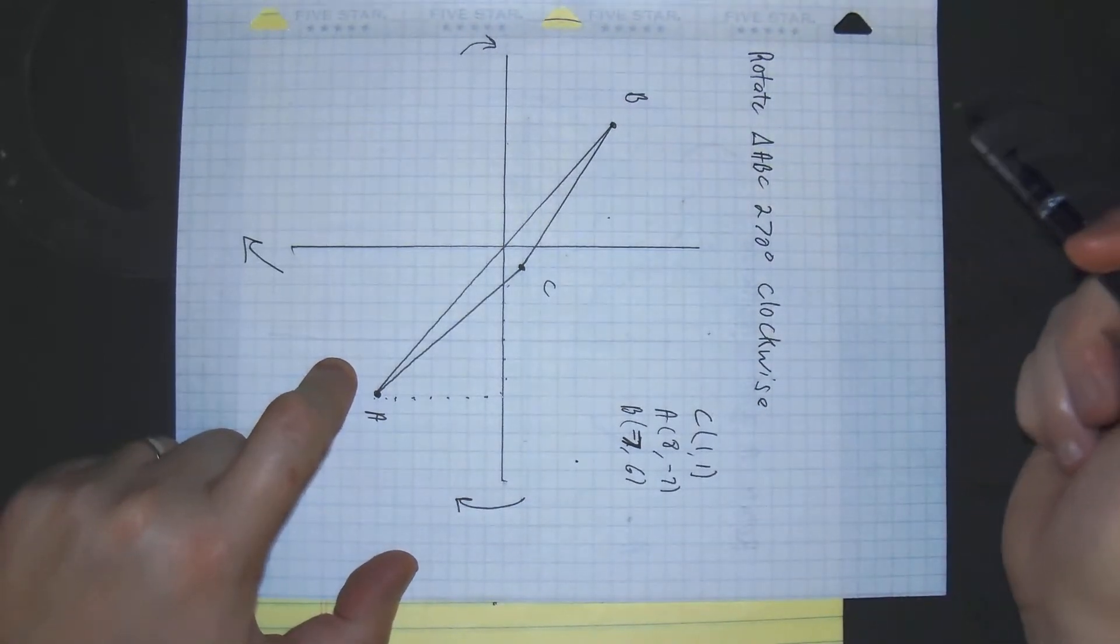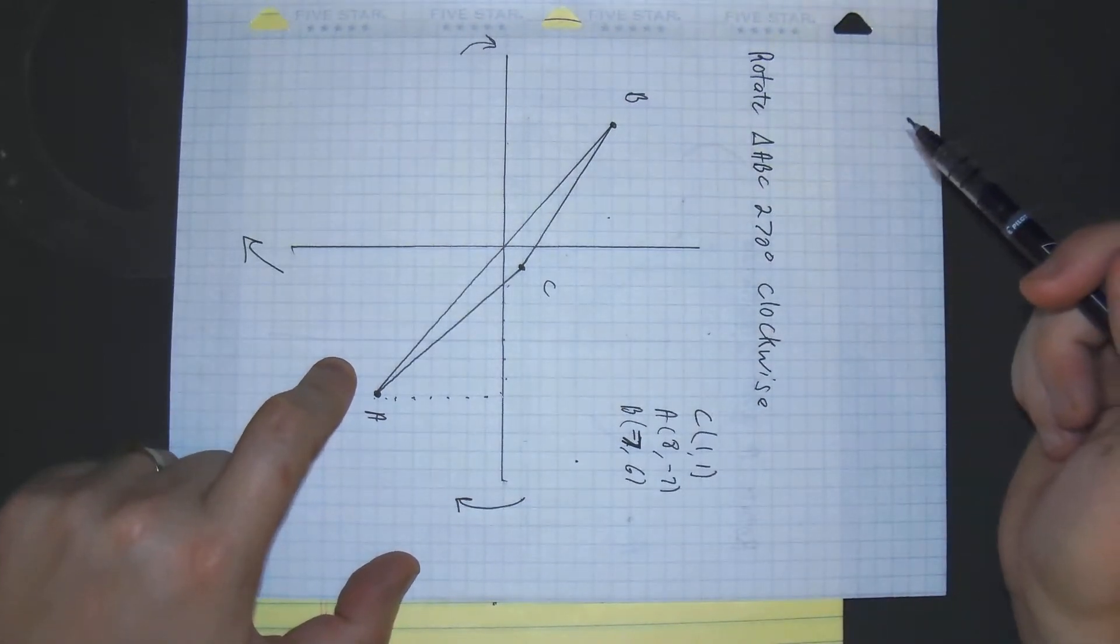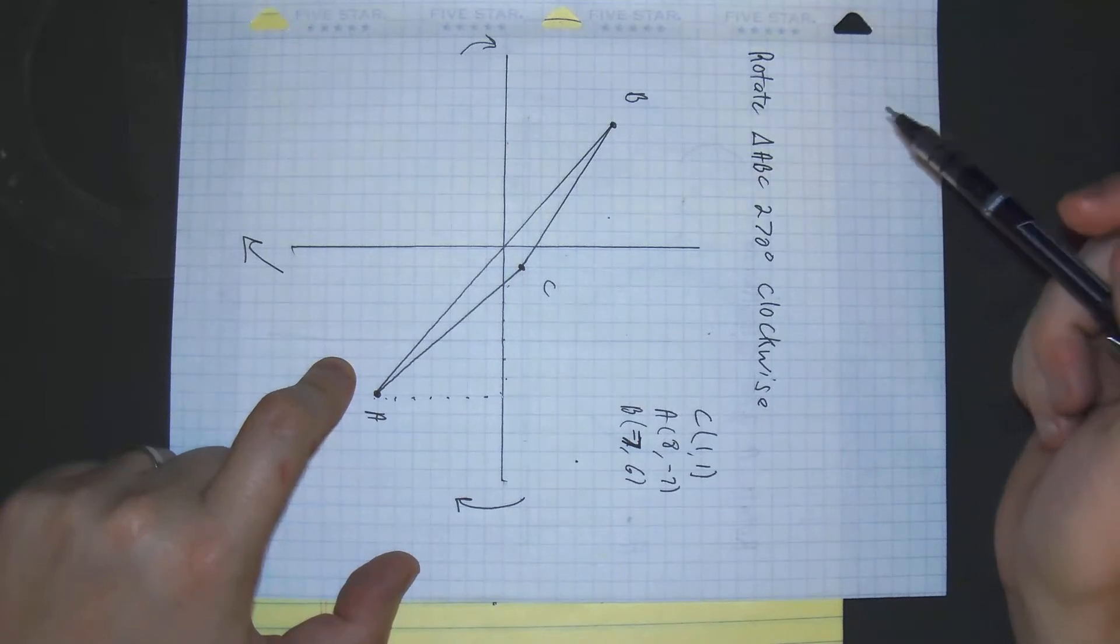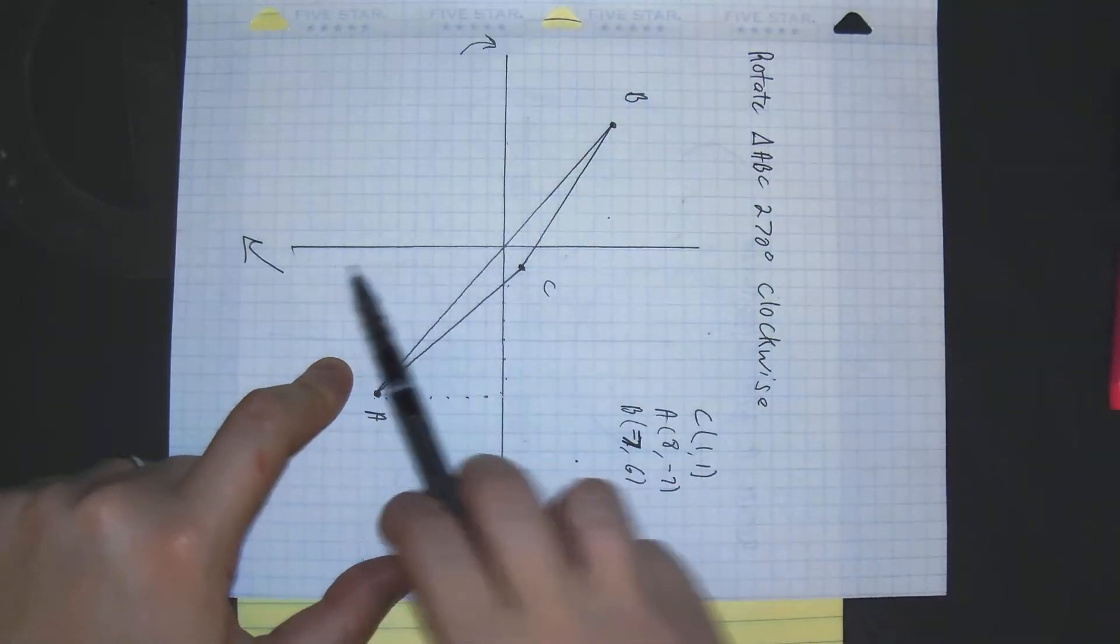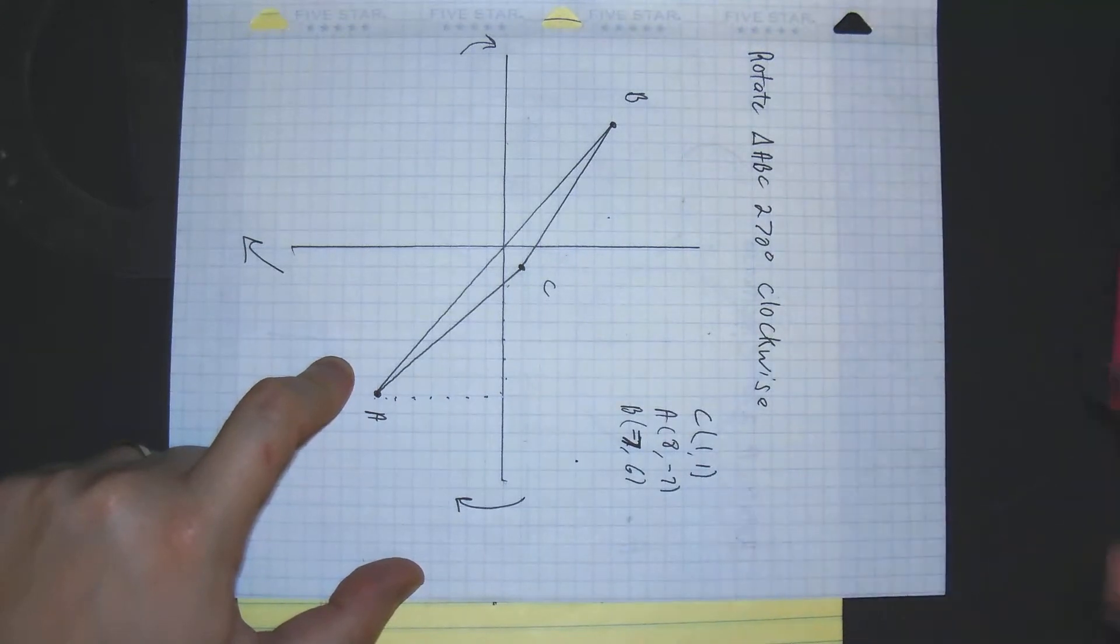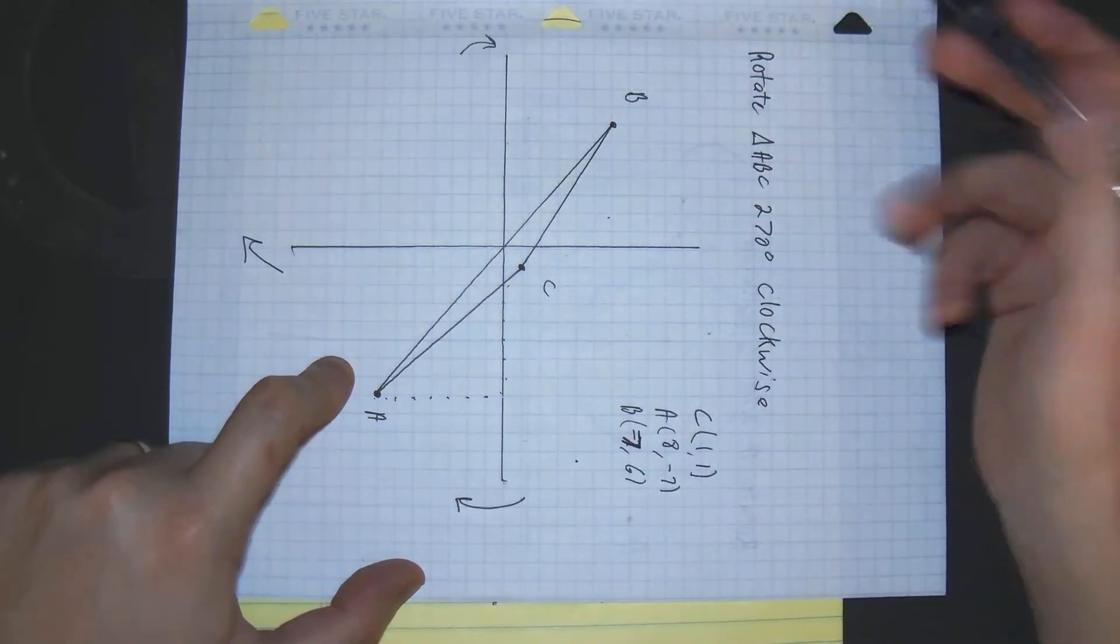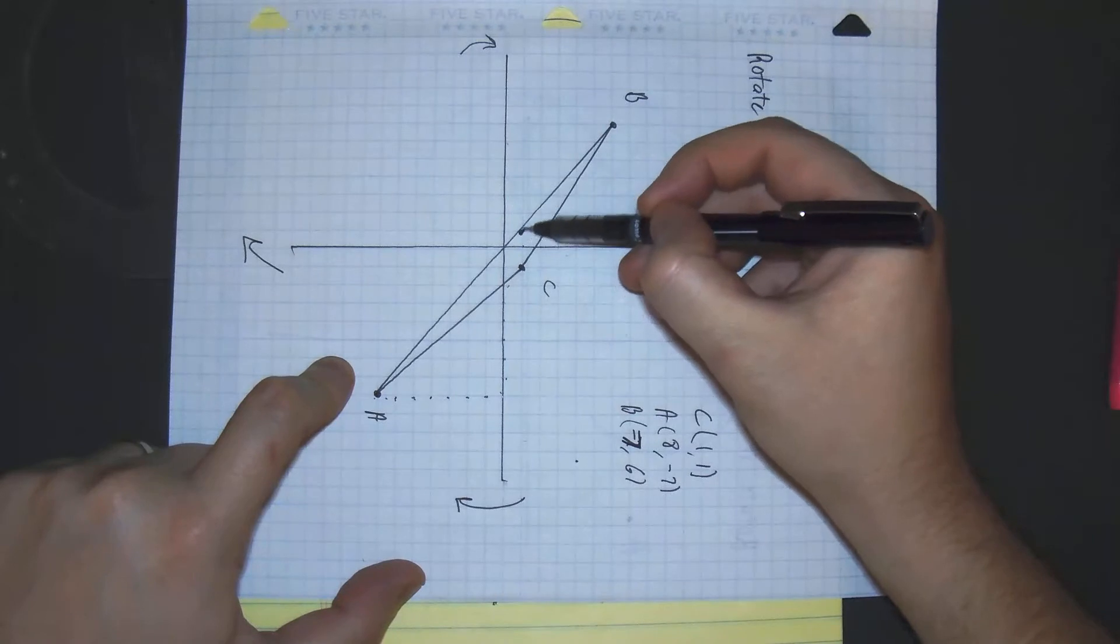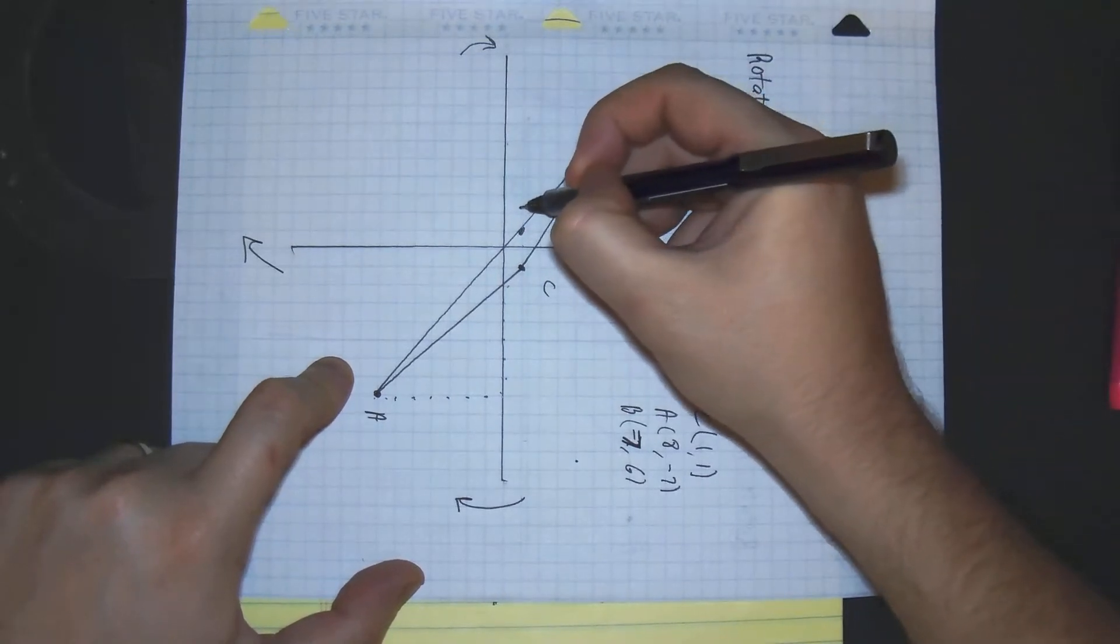Now that we rotate our paper with our visual way, we're going to use this as our new x-axis. This is our new y-axis. This is at 1, 1. So I would just go 1, 1. So that would be point C prime.